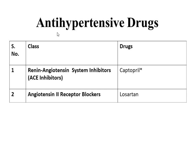In previous class, we have studied the classification of antihypertensive drugs. We divided antihypertensive drugs into six major classes. In this class, we will study the first two classes. First class is the Renin-Angiotensin System inhibitor or ACE inhibitor, with the drug Captopril. Second class is Angiotensin 2 receptor blocker, with the drug Losartan.